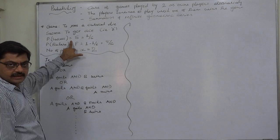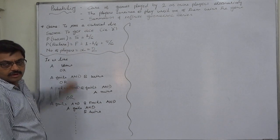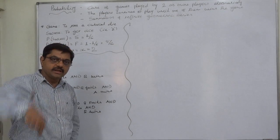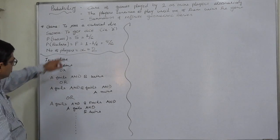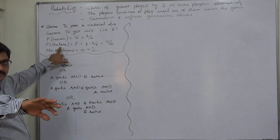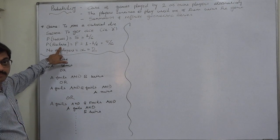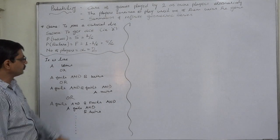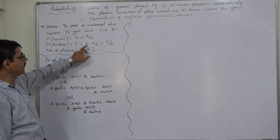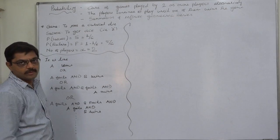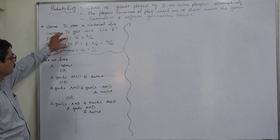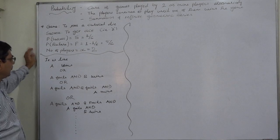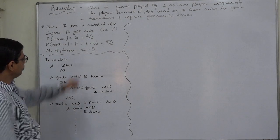What is the probability of getting one on a normal cubical die? It is 1/6, because total possible outcomes are six — one, two, three, four, five, or six — and the favorable case is only one. The opposite event is not to get one, that means failure. Since success and failure are mutually exclusive and exhaustive events, probability of failure = 1 − 1/6 = 5/6. We use S for probability of success and F for probability of failure. Number of players is two, indicated as x.